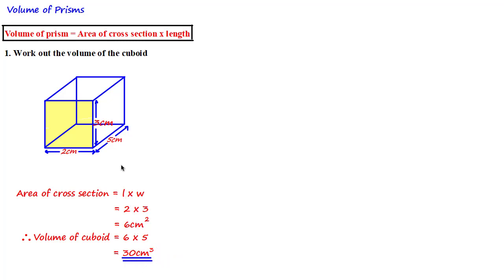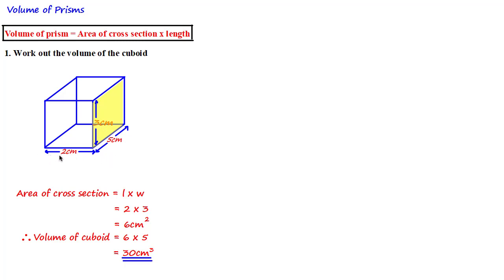Some prisms have more than one valid cross-section. For this cuboid we could have chosen a different face and got exactly the same volume. For example, choosing a different face — which also goes through the whole shape to the opposite parallel face — the area would be three multiplied by five, which is 15 centimeters squared, and multiplying by the length of two gives 30 centimeters cubed. You could have chosen any of these faces as the cross-section and got the same answer.